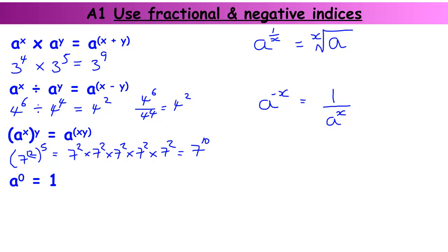A special case: anything to the power of 0 — it doesn't matter what it is, it could be 0.724 to the power of 0 — it's 1. That's always the case; it doesn't matter what the number is, it could be a negative number or anything.